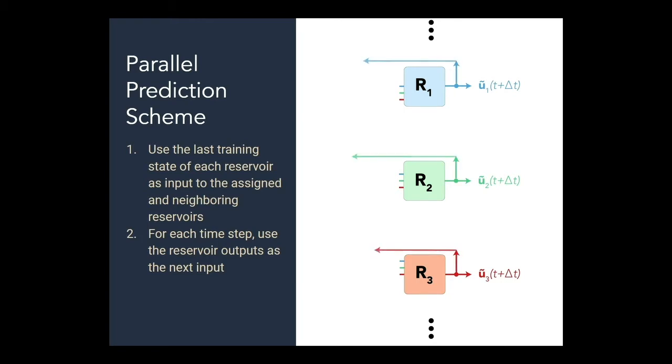Again this image is only really accurate for reservoir 2. Reservoirs 1 and 3 should be receiving input from other nodes. We've just not shown those for simplicity.